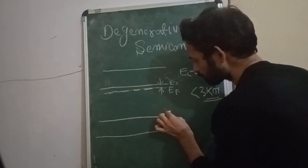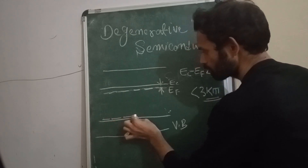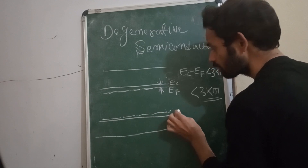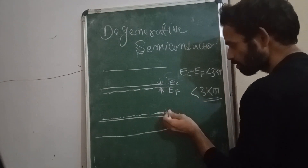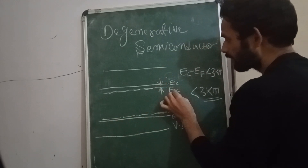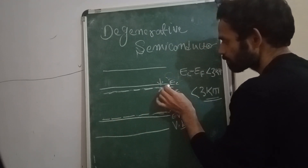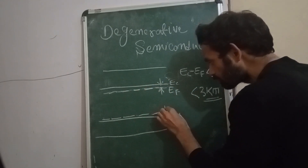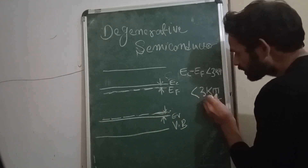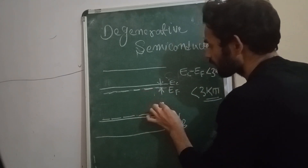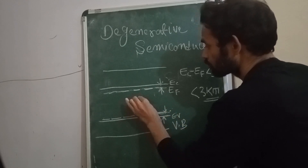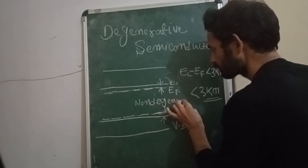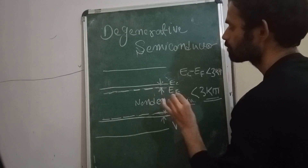In case of acceptor ion concentration, the Fermi energy level is just above the valence band. In case of donor ion concentration, the Fermi energy level is just below the edge of the conduction band. If this gap is less than 3kT in both cases, then we can say that this semiconductor is non-degenerative.